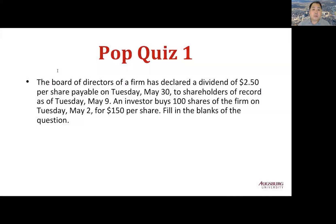Pop quiz. The board of directors of a firm has declared a dividend of $2.50 per share payable on Tuesday, May 30, to shareholders of record as of Tuesday, May 9. An investor buys 100 shares of the firm on Tuesday, May 2, at $150 per share. The amount of dividends that the investor will receive is $2.50 times 100 equals $250. The ex-dividend date, which is two business days before the date of record, is Friday, May 5. On that date, the stock price will drop by $2.50, the amount of the dividend.